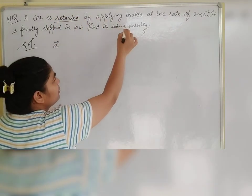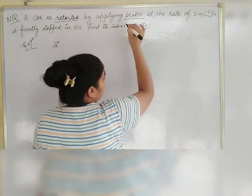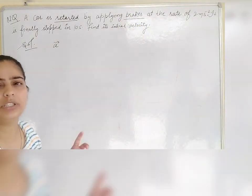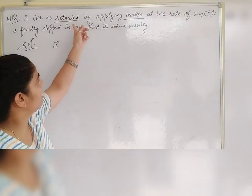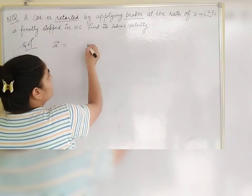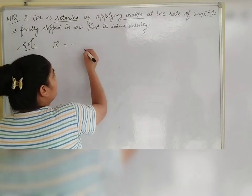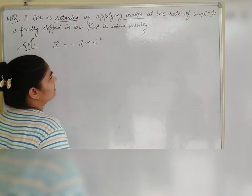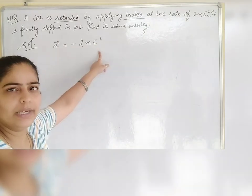If we don't put it, then you can see that the brake is applied and the brake causes retardation. Negative acceleration is retardation. What is negative acceleration? We have to put the acceleration as negative. So we have negative 2 meters per second square. Okay? We can write this.